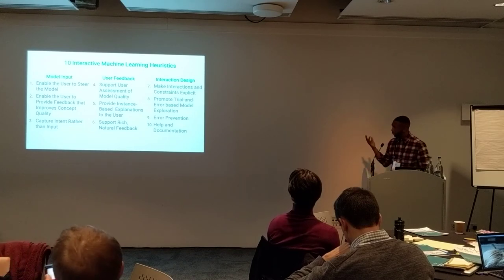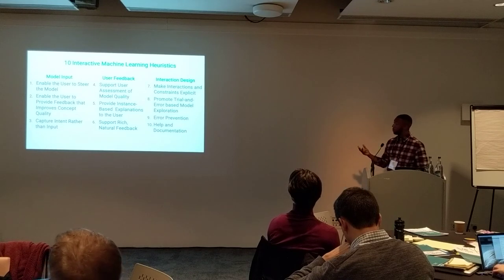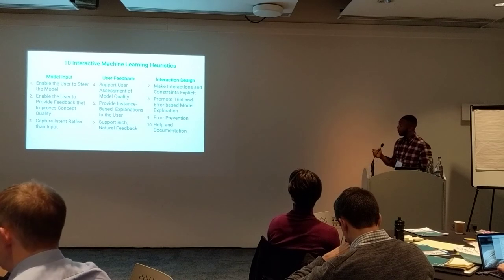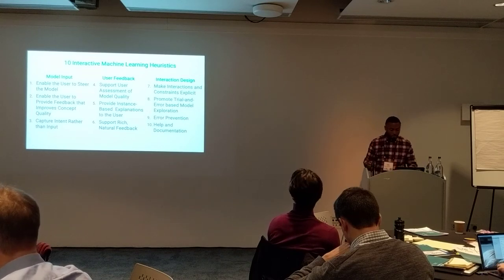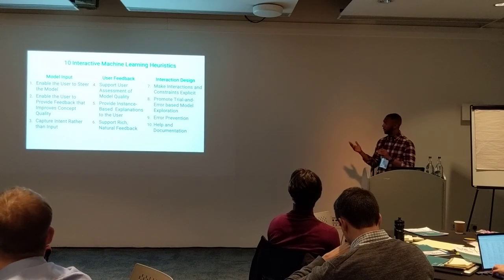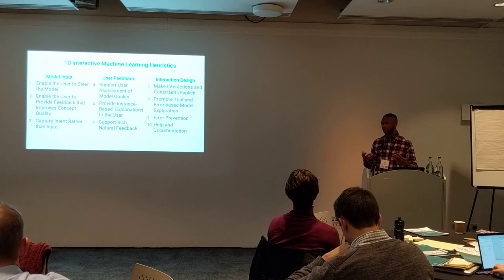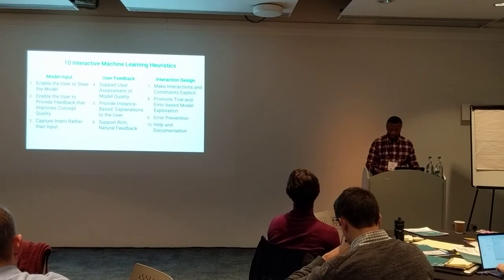I grouped them into three categories: the first three heuristics address what's important for model input; four through six address user feedback; and seven through ten cover particular interaction design considerations. These are a proposal — I haven't formally evaluated them. This is my attempt at thinking about whether there's a general set of principles that can be applied to systems like SharkStore that you can use before you even have any interaction with users to inform usability decisions.